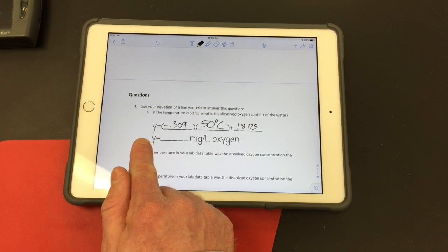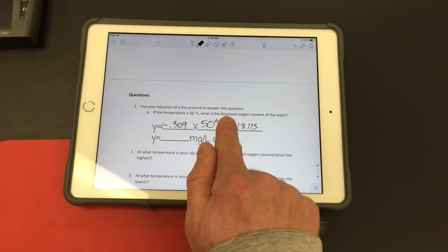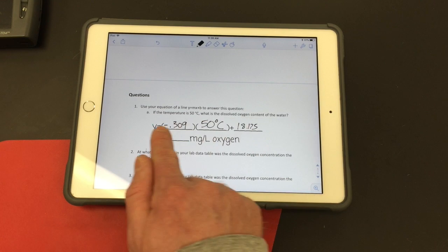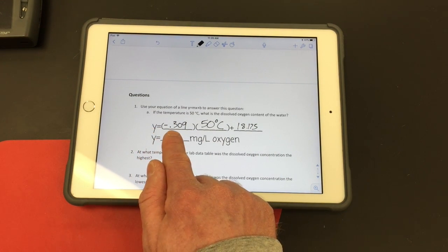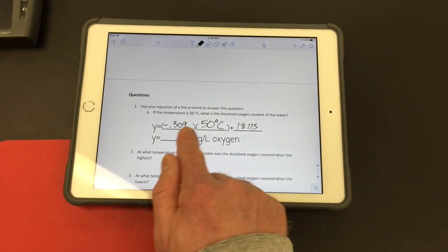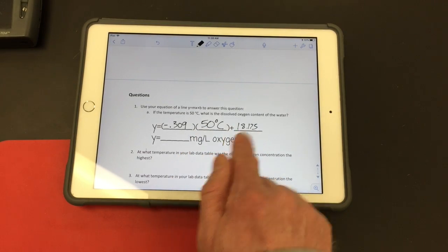So then I can just solve for y, because that's what it's really asking. It's asking what is the dissolved oxygen content, and that's my y value. So I'm going to take 0.309 times 50 plus 18.75.